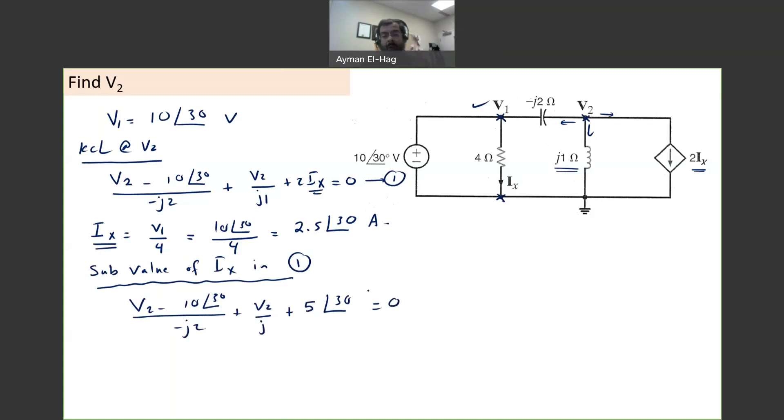So this is one equation with one unknown. It's very straightforward. But now we need to be careful dealing with the complex numbers. So what I will be doing here, I will be handling each term alone as we did in the previous question. And then we will add them.